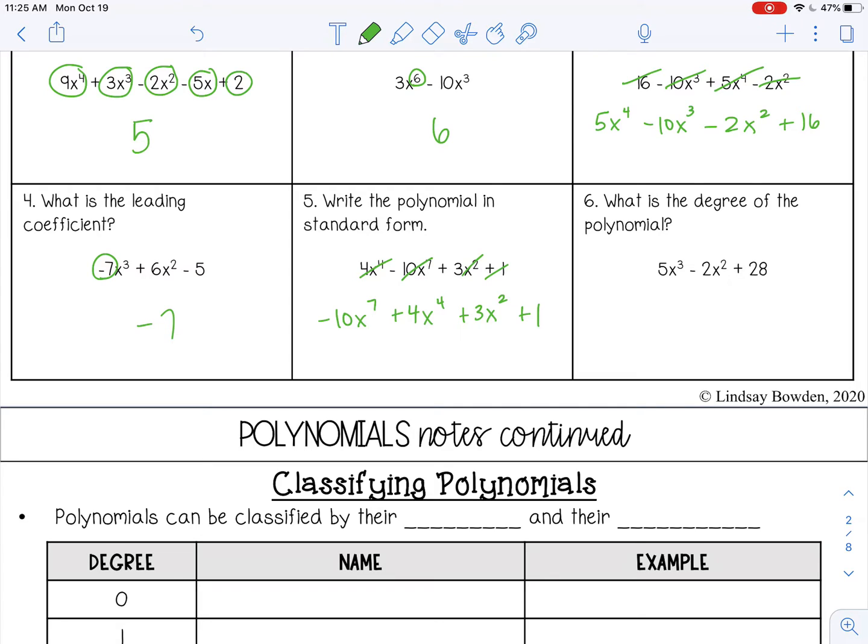Number 6, what is the degree of the polynomial? So remember, that's the highest exponent, which would be 3.